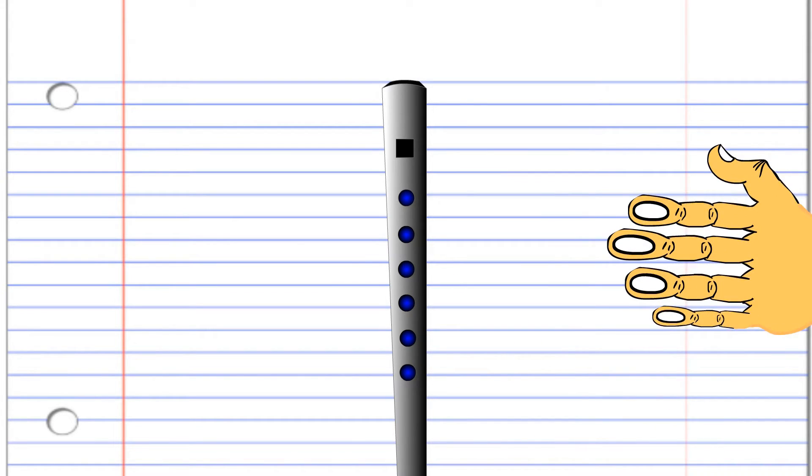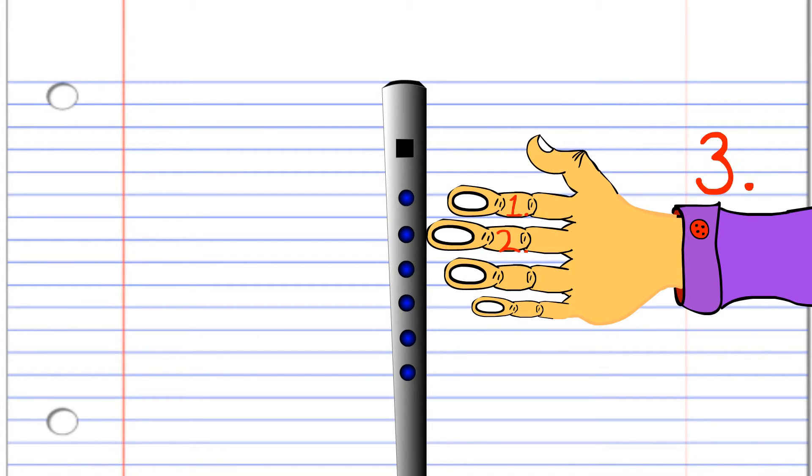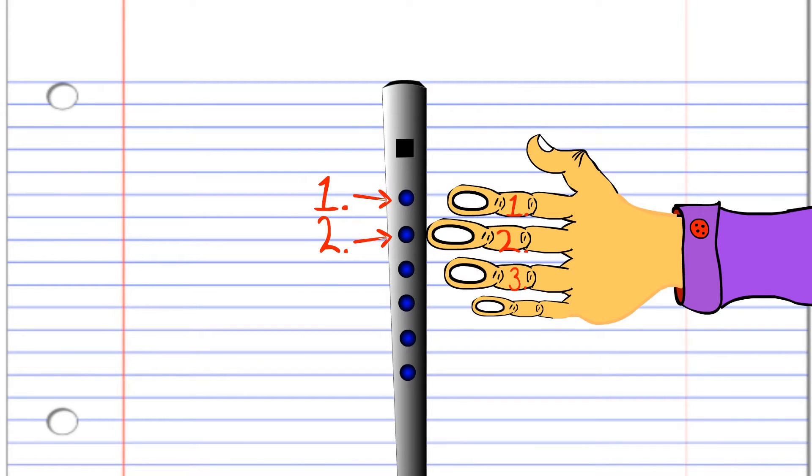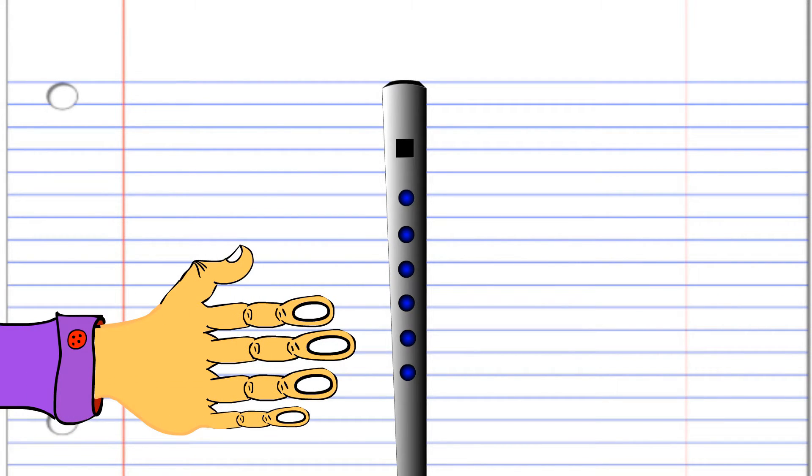When holding your penny whistle, remember that your left hand is positioned closest to your mouth and uses fingers one, two, and three to cover holes one, two, and three. The right hand is positioned so that fingers four, five, and six can cover holes four, five, and six.